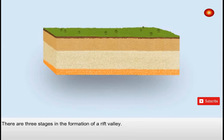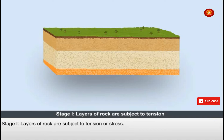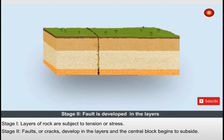There are three stages in the formation of a rift valley. In Stage 1, layers of rock are subject to tension or stress. Faults or cracks then develop in the layers and the central block begins to subside.